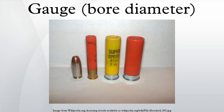Shotguns larger than 10-gauge are now rarely manufactured. 8-gauge is prohibited for duck hunting and is rare in the United States. However, it is still used in many parts of the world for bird hunting. Its shells are usually black powder paper cartridges, as opposed to the plastic wax cartridge and smokeless powder of today. 4-gauge is even rarer, and is mainly used for punt guns in Britain.